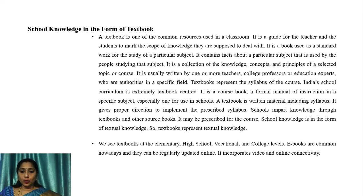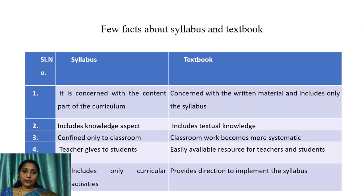Schools impart knowledge through textbooks and other source books. Textbooks represent textual knowledge, seen at the elementary, high school, vocational and college level. E-books are common nowadays and can be regularly updated online; they incorporate video and online connectivity. Key facts: syllabus is concerned with the content part of the curriculum and includes the knowledge aspect, confined to the classroom. Textbook is concerned with written material and includes only the syllabus; it includes textual knowledge. Classroom work becomes more systematic with the textbook, which is an easily available resource for teachers and students and provides direction to implement the syllabus.